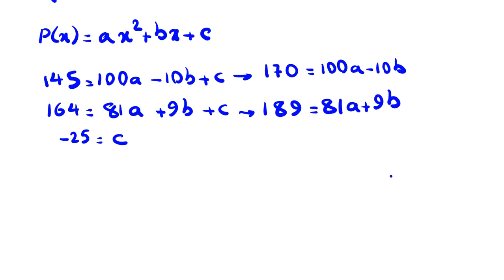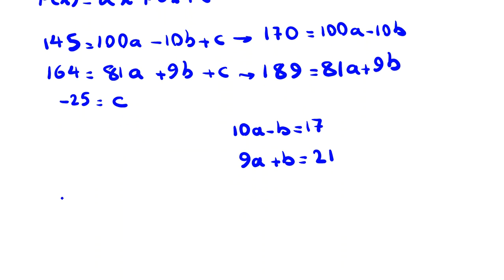Let's simplify. So here, the first equation, if you divide by 10, it will be 10a - b = 17. And this one, if you divide by 9, it will be 9a + b = 21. So if you add these two equations, then we have 19a = 17 + 21 = 38. So a = 2. And b is 21 - 18 = 3.